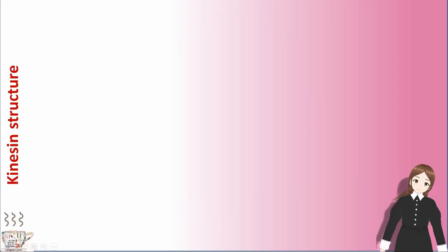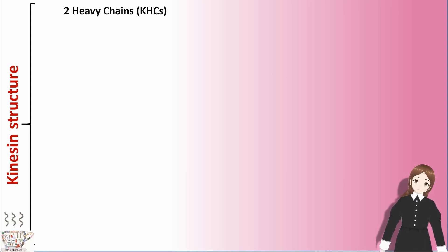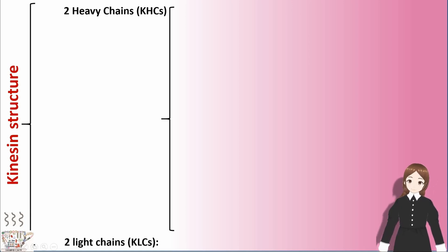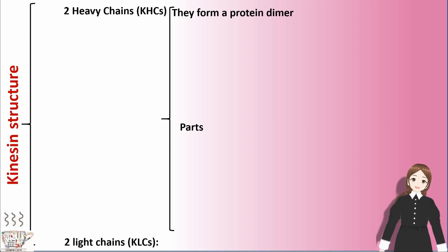Kinesin structure. Kinesin has two heavy chains (KHCs) and two light chains (KLCs) in its structure. The heavy chains form a protein dimer, and every heavy chain has two parts.